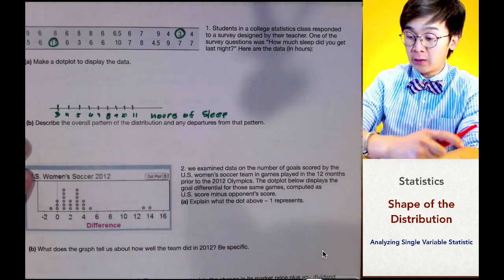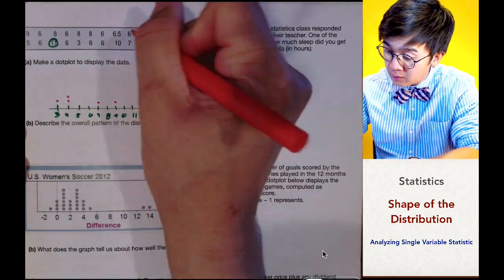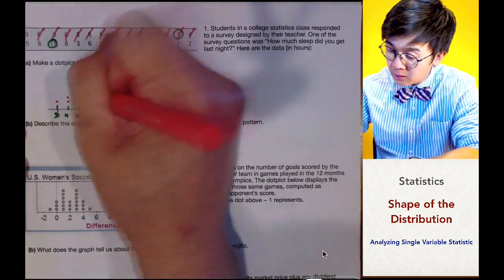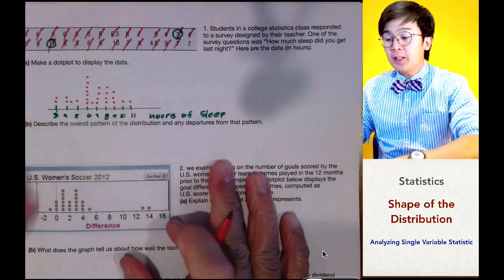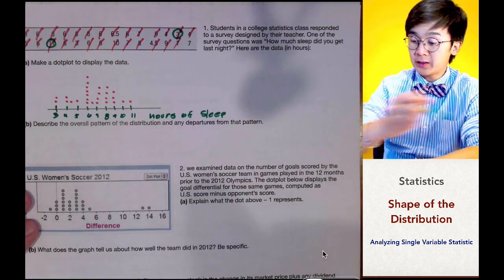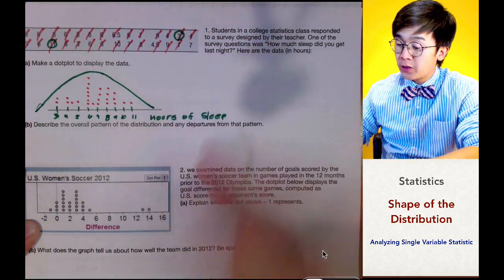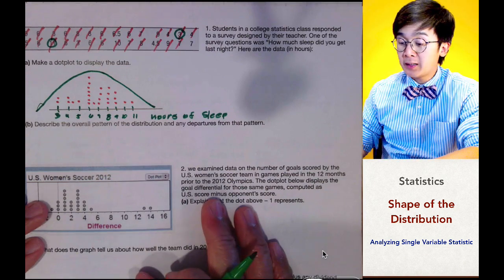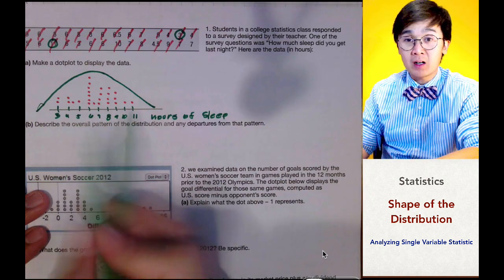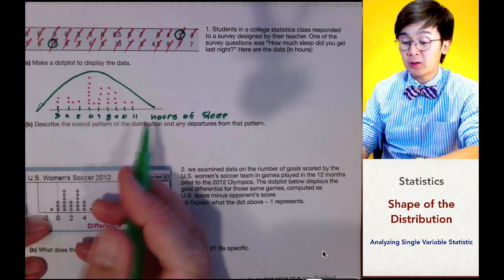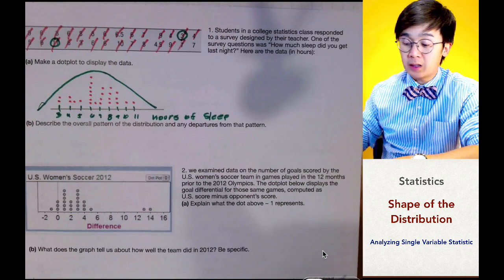Let's start working on our dot plot, beginning with three. Our dot plot is roughly symmetric. To describe the overall pattern: the shape is roughly symmetric, the spread or range of values is between three and eleven hours, and there are no apparent outliers in our data set. Let's write out our description and analysis for the dot plot.